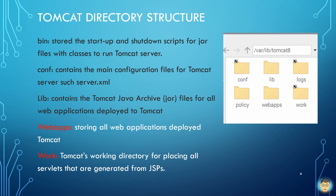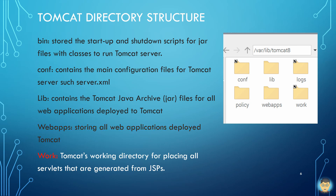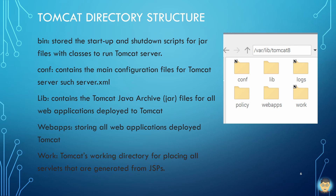The conf folder files store system configuration as XML format-based files. The lib folder contains the Tomcat Java archive JAR files for all web applications deployed to Tomcat server. The webapps folder is used for storing all web applications deployed for Tomcat server. The work folder stores all servlets generated from JSPs.